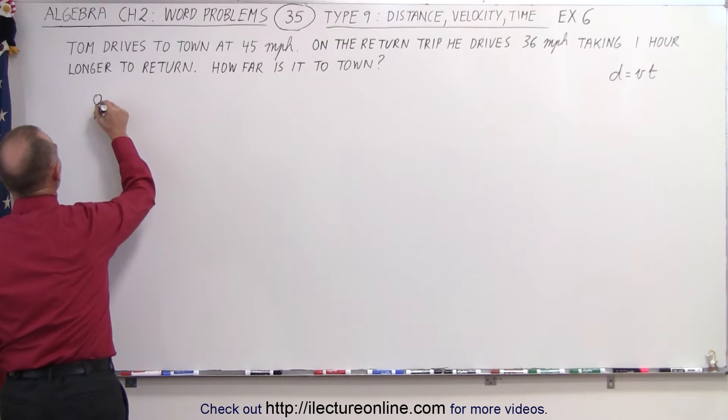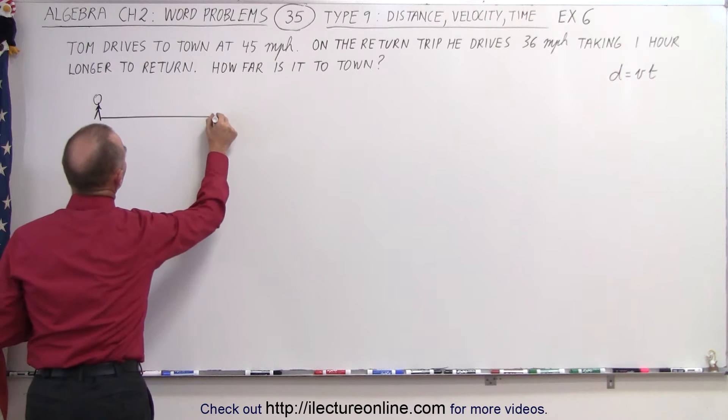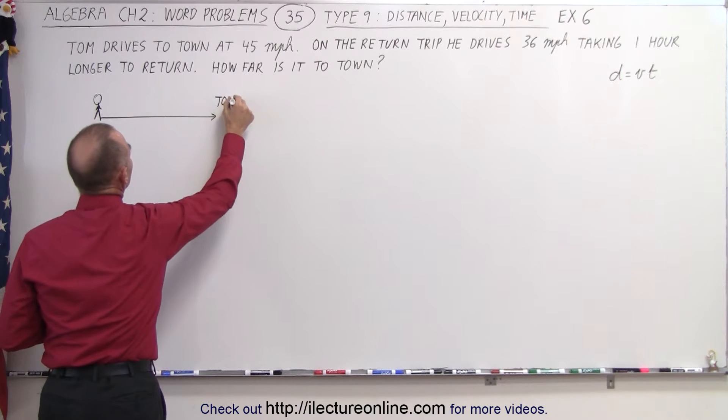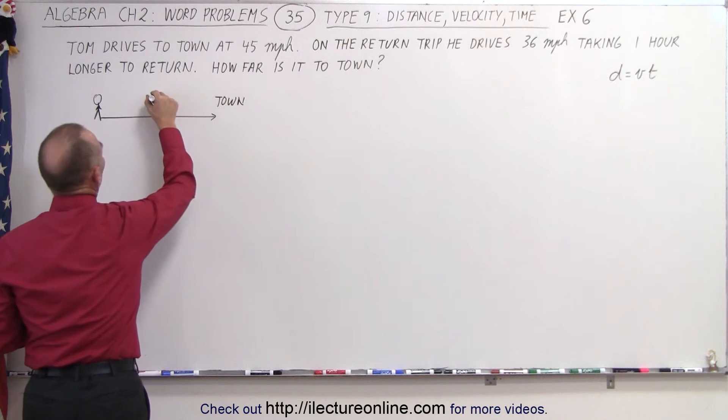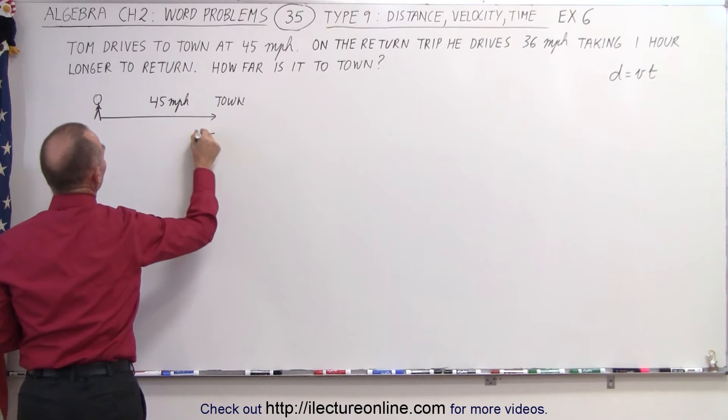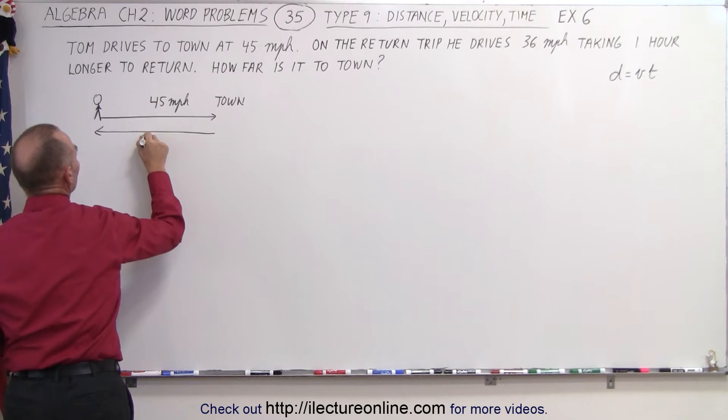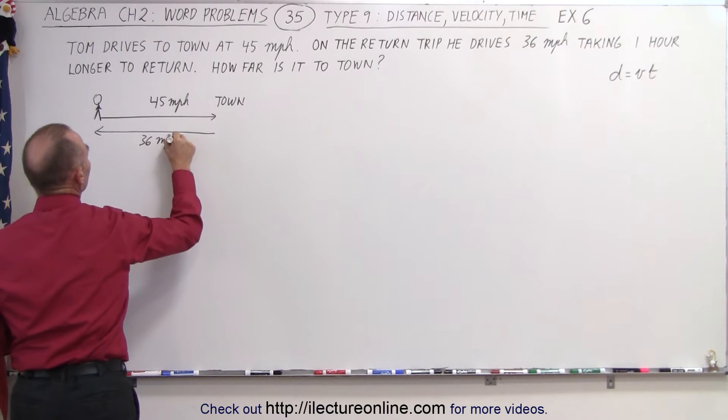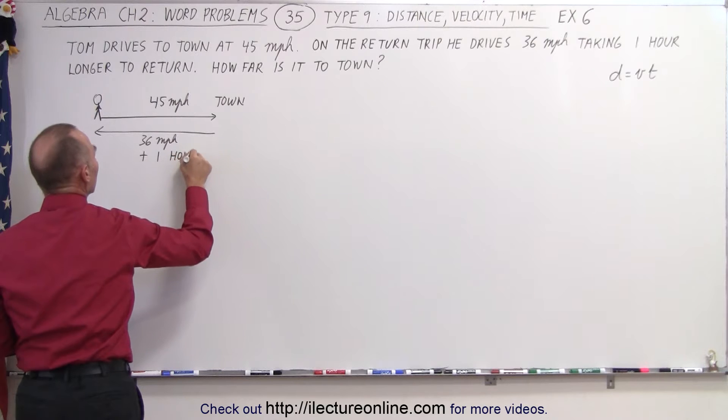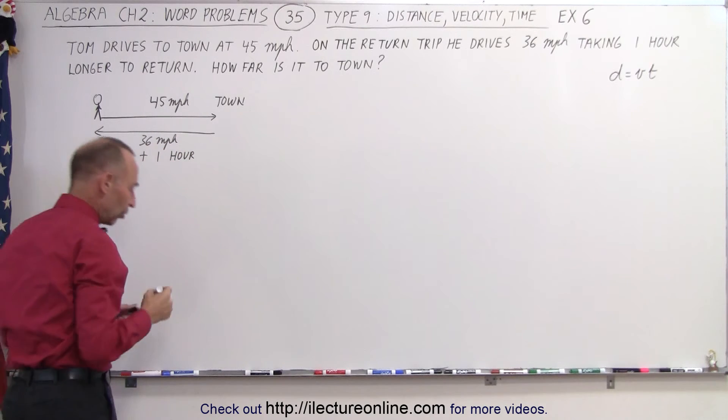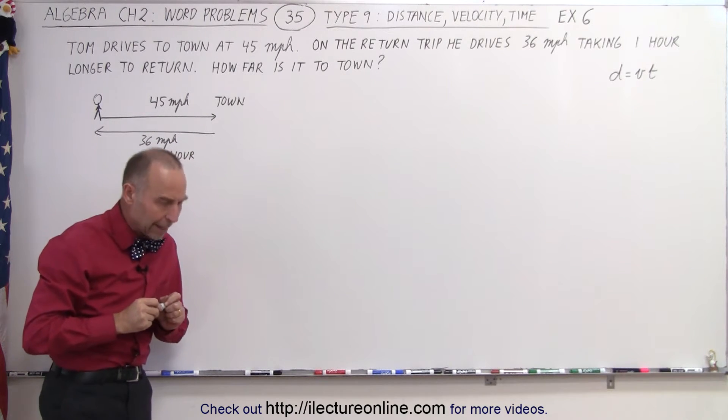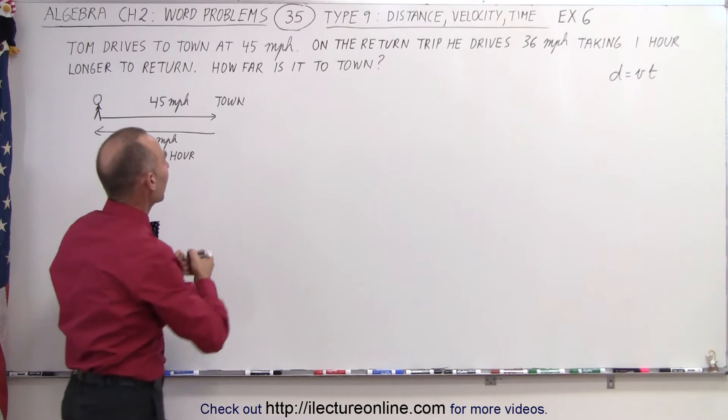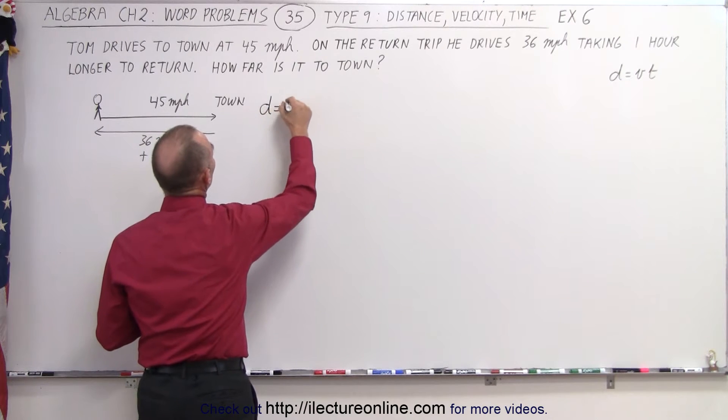So here's Tom, and he drives to town at 45 miles per hour. Then he drives back at 36 miles per hour, and it takes one hour longer to go home as it did to go to town. And we want to know how far it is to town. So distance equals question mark.